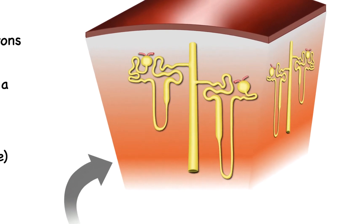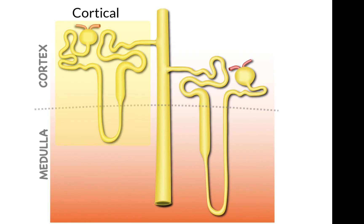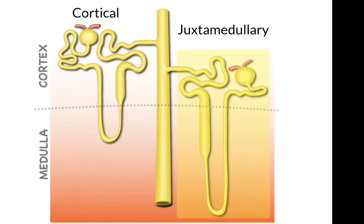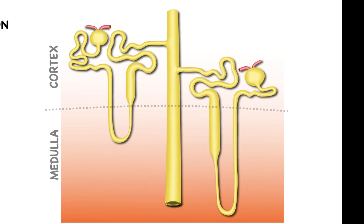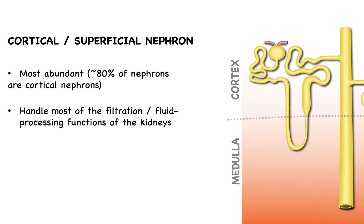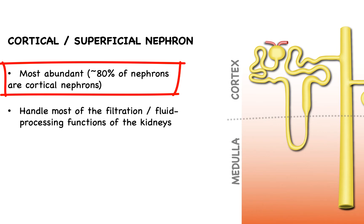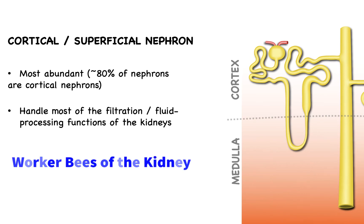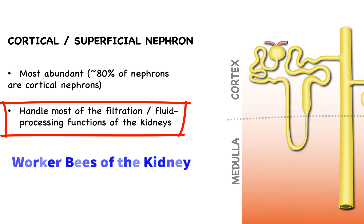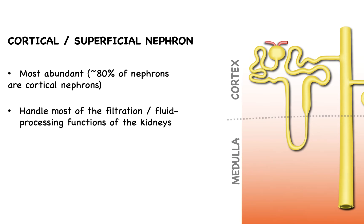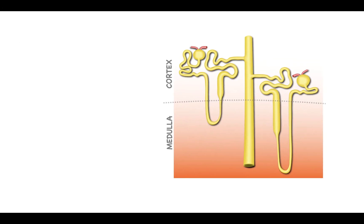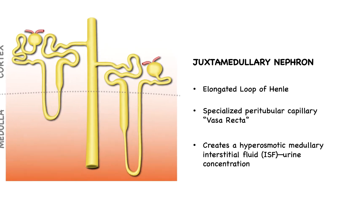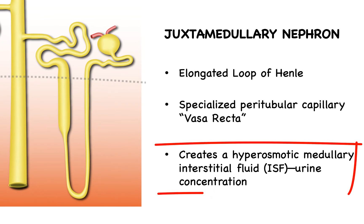There are two types of nephrons in the kidneys: cortical nephrons and juxtamedullary nephrons. Cortical nephrons, also known as superficial nephrons, are the most abundant — approximately 80% of your nephrons are cortical nephrons. You can think of these as the worker bees of the kidneys, responsible for a majority of the filtration and fluid processing. The juxtamedullary nephrons, on the other hand, are specialized nephrons whose main function is to create a hyperosmotic medullary interstitial fluid, or ISF.